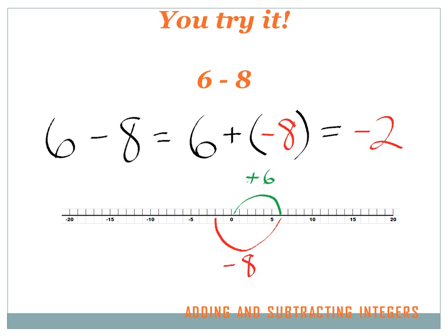Six minus eight: let's do it on the number line first. We start at zero and go positive six. Now we've got minus eight — minus means go to the left — so I go eight to the left and end up at minus two. Another way: if you're subtracting a larger number from a smaller number, you'll end up on the left side of the number line with a negative answer. The difference between six and eight is two, and negative eight is a greater distance to the left than positive six is to the right, so the answer is negative two.